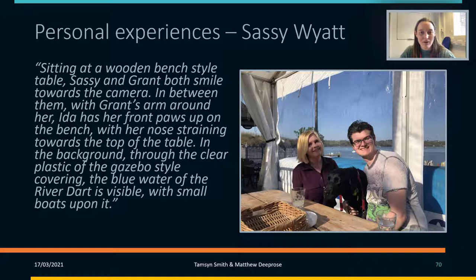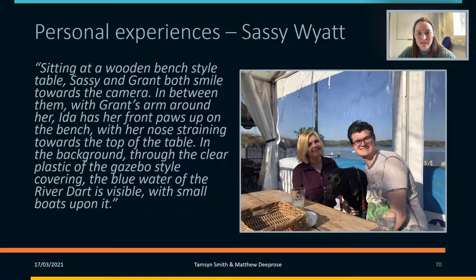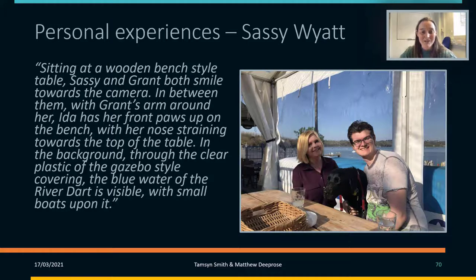It may take longer to write alt text descriptions, but it makes such a difference to people who are visually impaired and use screen readers. Sassy's alt text for her image reads: 'Sitting at a wooden bench style table, Sassy and Grant both smile towards the camera. In between them, with Grant's arm around her, Ida has her front paws up on the bench with her nose straining towards the top of the table. In the background, through the clear plastic gazebo-style covering, the blue water of the river Dart is visible with small boats upon it.' Someone else might have just said 'a blonde-haired woman sitting next to a man with a black dog between them' — not nearly as evocative. The geographical detail — the river Dart — also helps create more or less of a connection with the image.